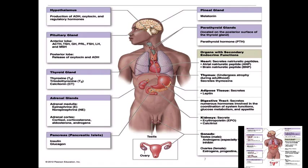Other organs have endocrine function. The heart secretes natriuretic peptides — atrial natriuretic peptide (ANP) and brain natriuretic peptide. The word 'natriuretic' comes from natrium — sodium — so we are dealing with sodium regulation. ANP is the antagonist to aldosterone: aldosterone retains sodium while ANP promotes sodium excretion. Holding sodium means holding water, raising blood pressure; ANP does the opposite, lowering blood pressure.